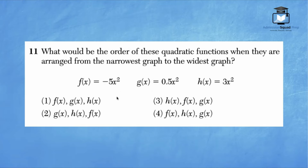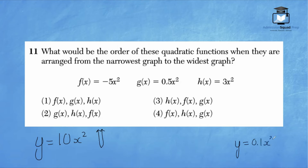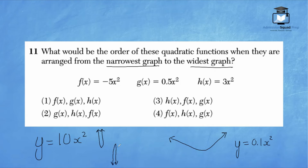Question 11: what would be the order of these quadratic functions from the narrowest graph to the widest? The narrower the graph, the higher the coefficient; the wider the graph, the smaller the coefficient. We consider absolute values of coefficients — negative 5 has absolute value 5, which is the largest, so f of x is narrowest. Then h of x comes next. The coefficient of 0.5 is smallest, so that is the widest. The correct answer is choice 4.